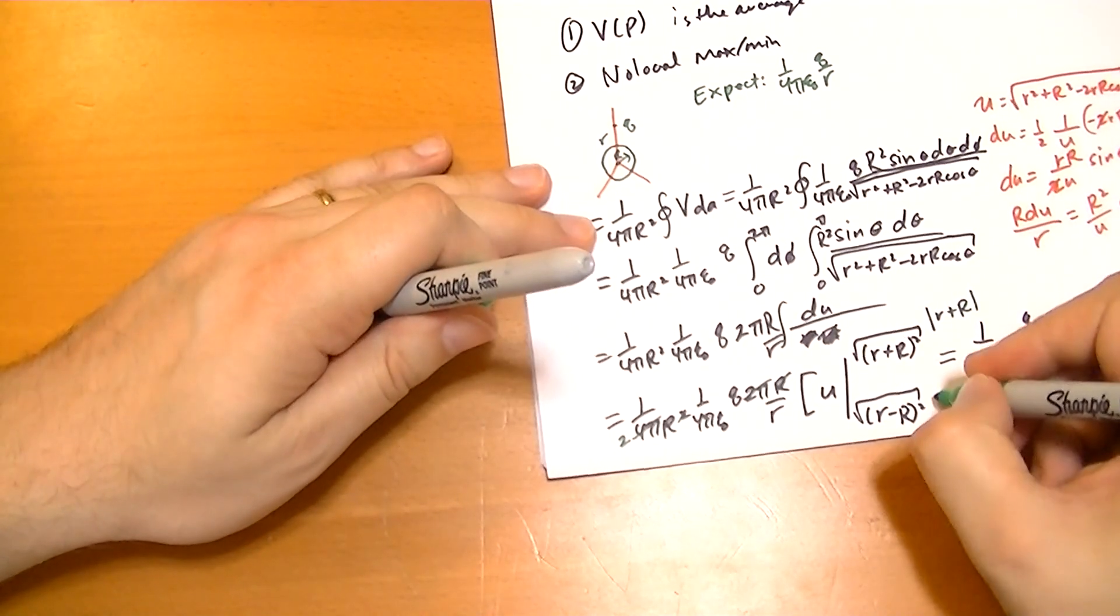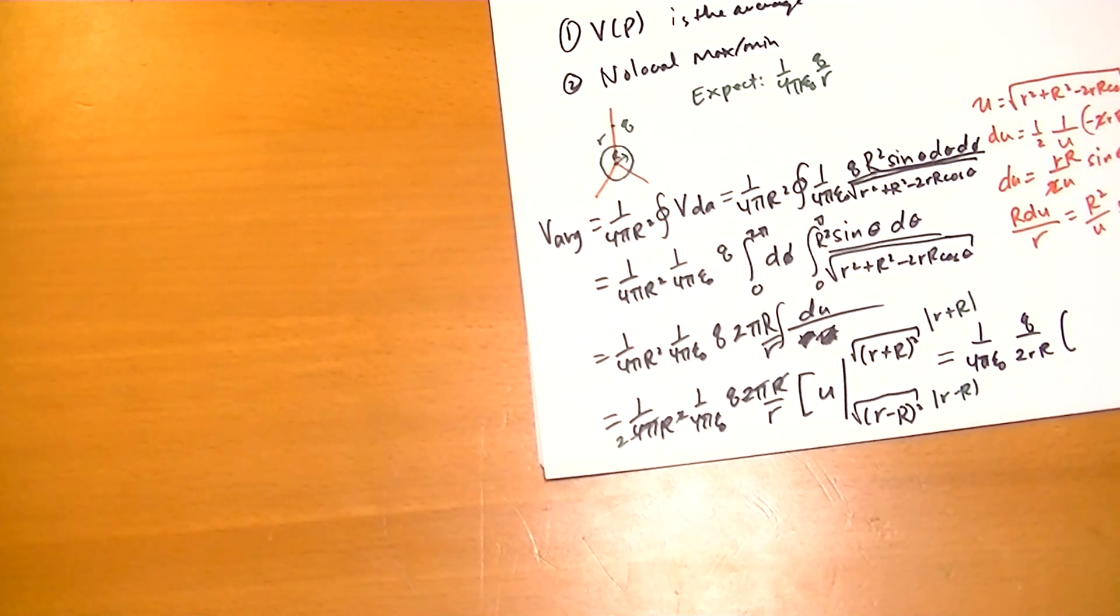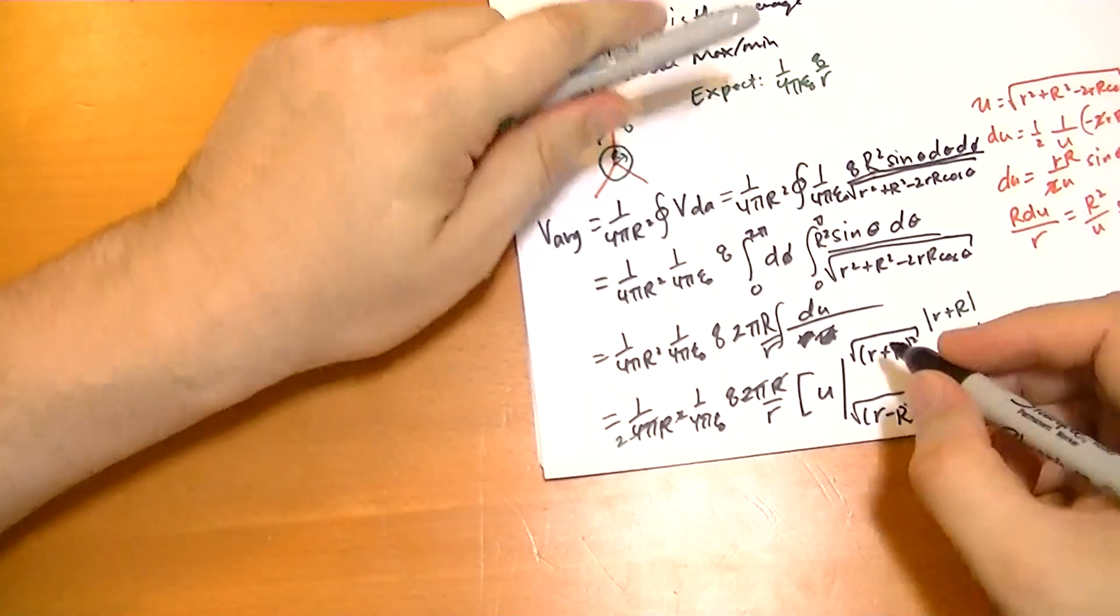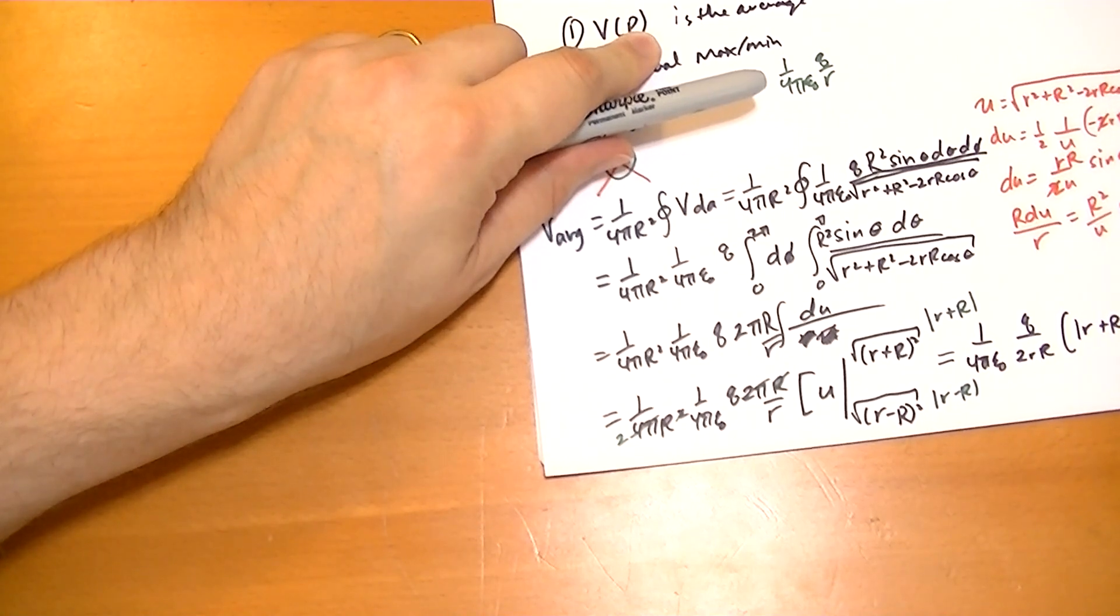So when we plug this all in, we get r plus R minus r minus R.